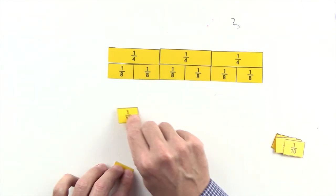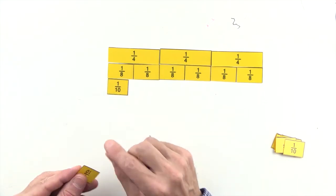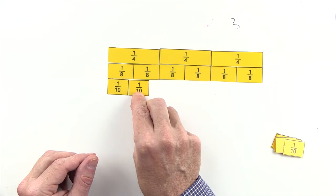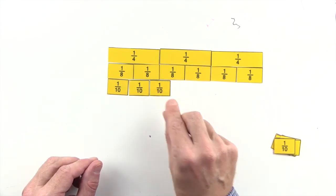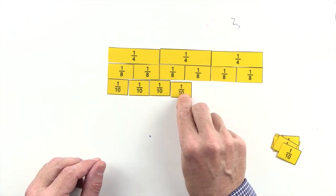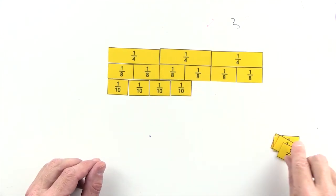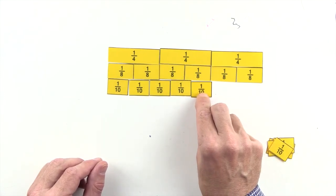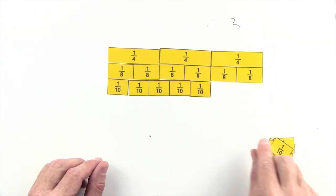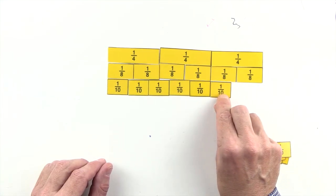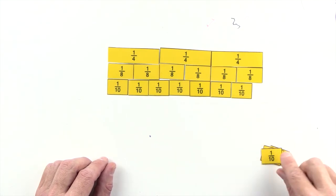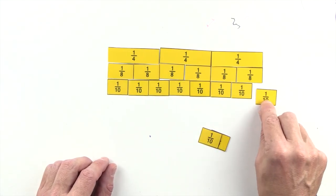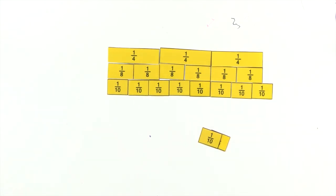One tenth, two tenths, three tenths, four tenths, five tenths, six tenths, and seven tenths are less than three quarters. And eight tenths are greater than three quarters. So we can't use tenths to make an equivalent fraction to three quarters.